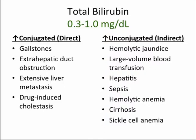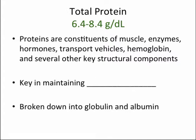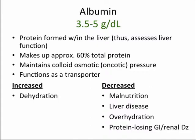Proteins are constituents of muscle, enzymes, hormones, transport vehicles, hemoglobin, and other key structural components. They are key in maintaining oncotic pressure, which is the pulling force acting to pull fluid into an area. Total protein can be broken down into globulin and albumin. The total protein can be decreased in liver disease and malnutrition. Albumin is notably the most important protein in the body, formed within the liver, making up approximately 60% of total protein. Albumin primarily maintains oncotic pressure and functions as a transporter. Albumin may be increased in dehydration and decreased in malnutrition, liver disease, overhydration, and protein-losing GI or renal disease. A decrease in albumin suggests chronic liver disease because the half-life of albumin is about 20 days.